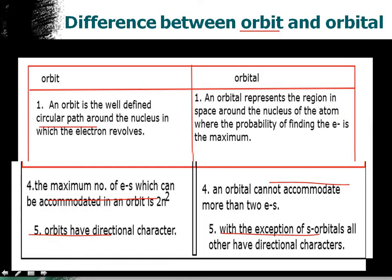The maximum number of electrons which can be accommodated in an orbit is 2n². But an orbital cannot accommodate more than 2 electrons. In an orbital, there are 2 electrons in an orbital.